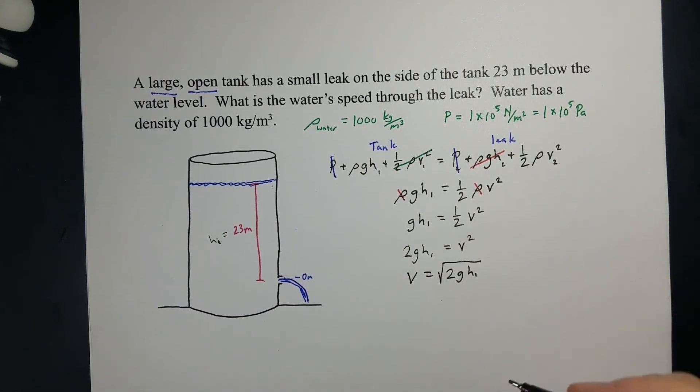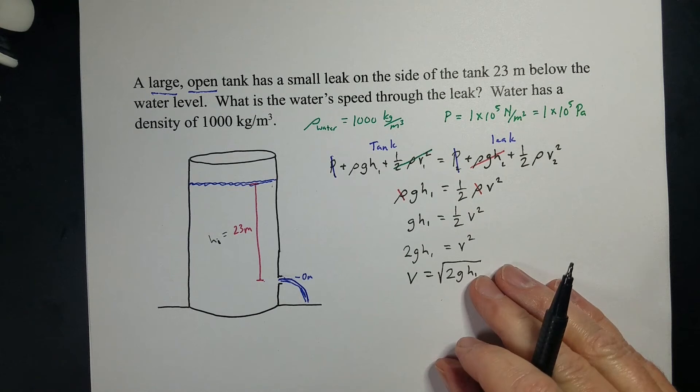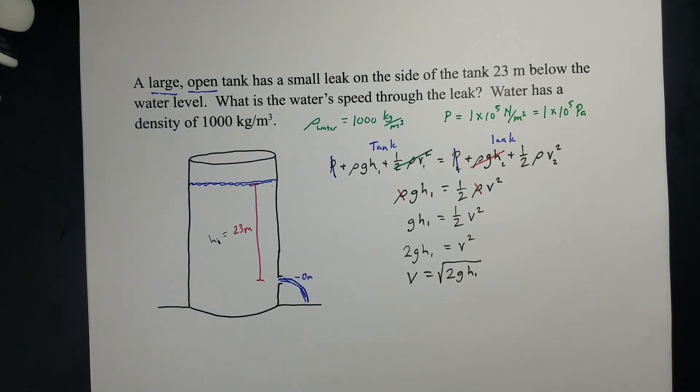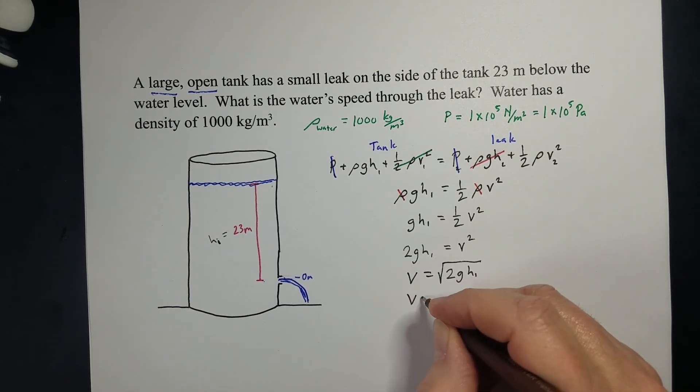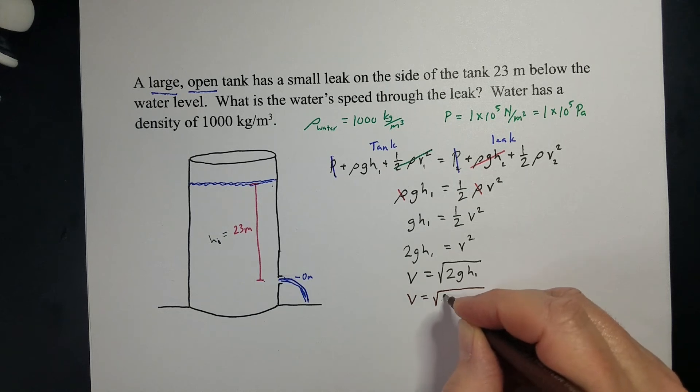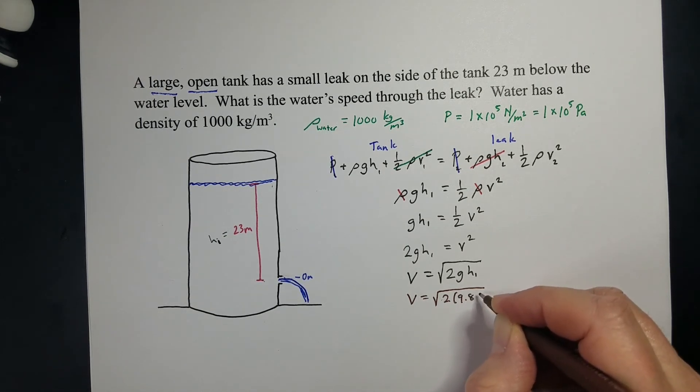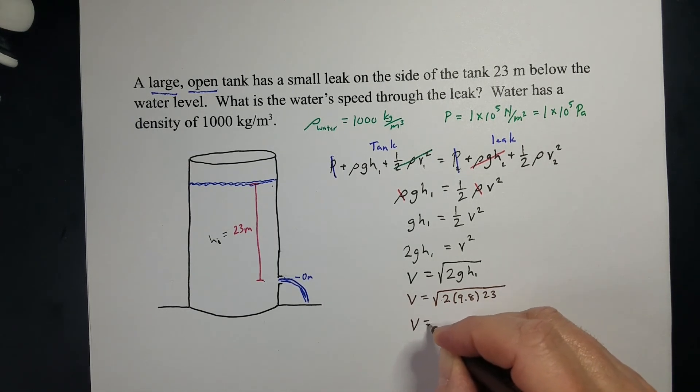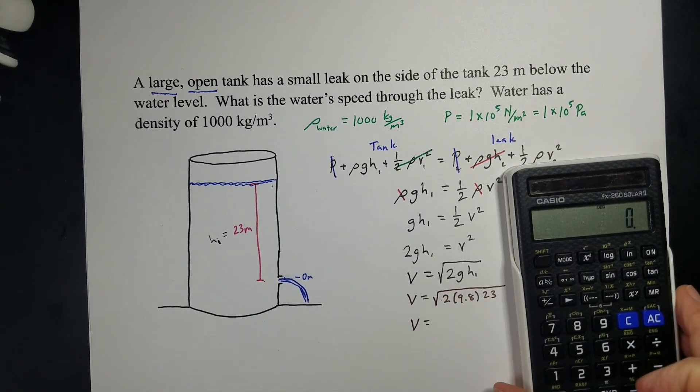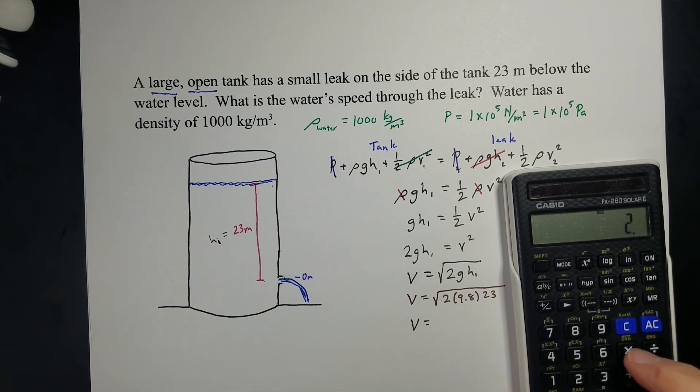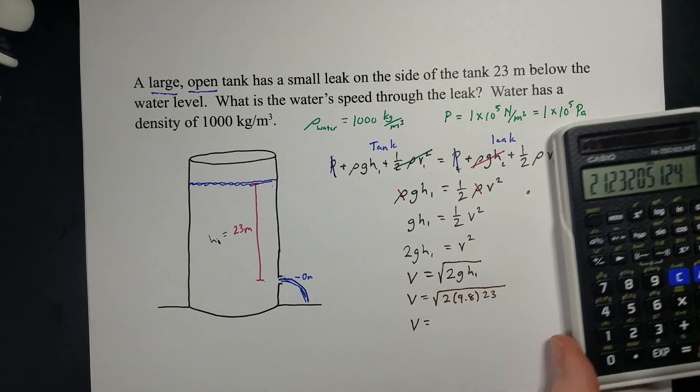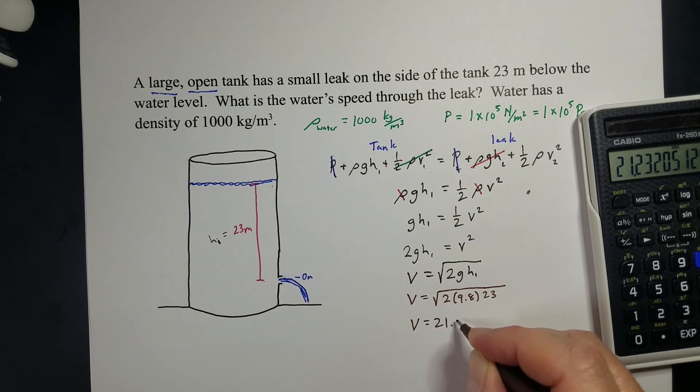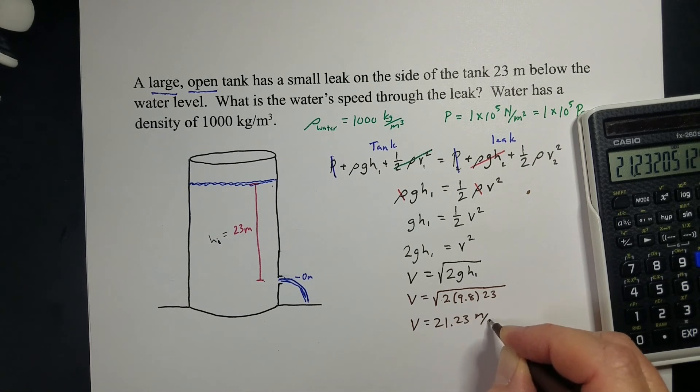And so to solve this, now that I've got everything solved, it reduces quite nicely. I can actually plug in my numbers and determine the velocity of the water shooting out of that hole in the tank. So 2 times 9.8 times 23. And we get a velocity of, let's see, 2 times 9.8 times 23. Take the square root. It's going to shoot out at 21.23 meters per second.